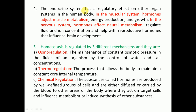The endocrine system has a regulatory effect on other organ systems in the human body. In the muscular system, hormones adjust muscle metabolism, energy production, and growth of muscles. In the nervous system, hormones affect neural metabolism, regulate fluid and ion concentration, and reproductive hormones can influence the development of the brain.